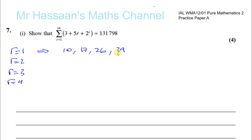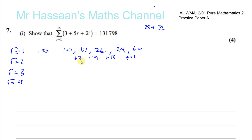So you can see there's not really any pattern here — you're going up by 7, then by 9, then by 13. And if you try R equals 5, you get 3 plus 25 that's 28, plus 2 to the power of 5 which is 32, giving 60. So the differences are going up by 2, then 4, then about 8 — there's no consistent pattern.